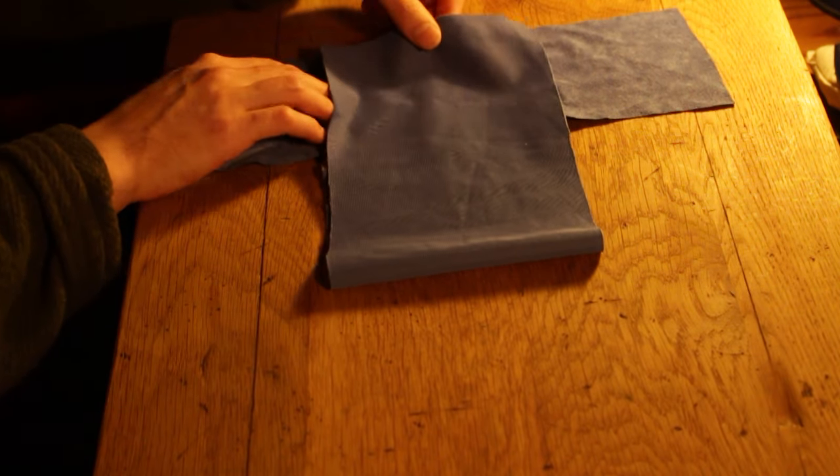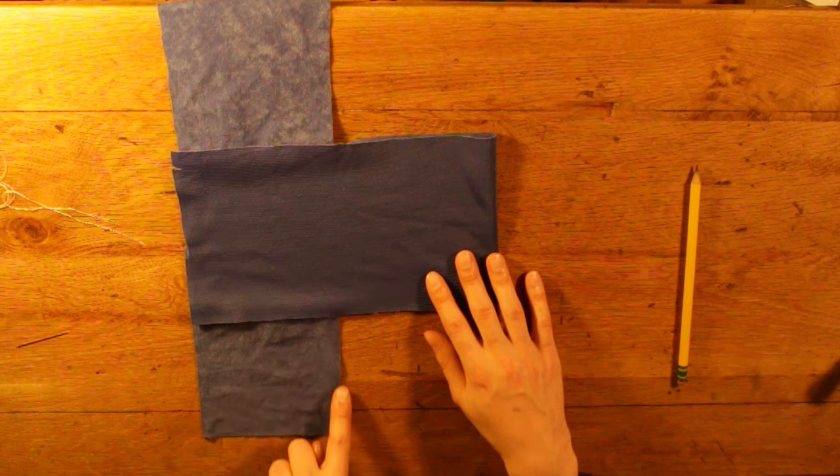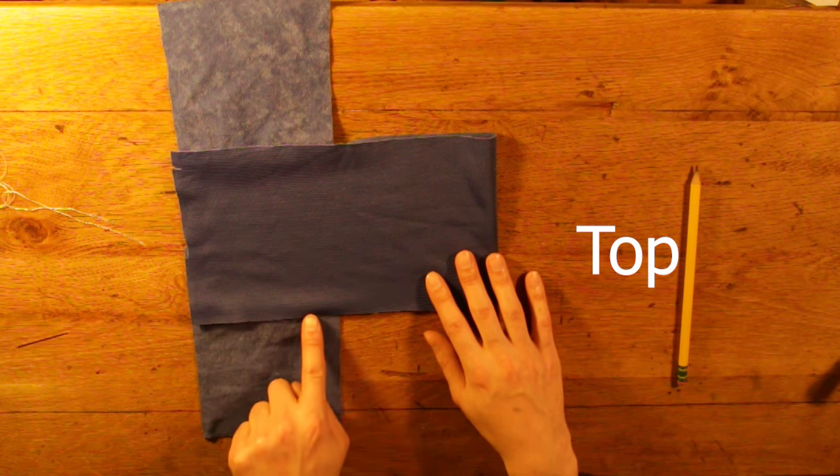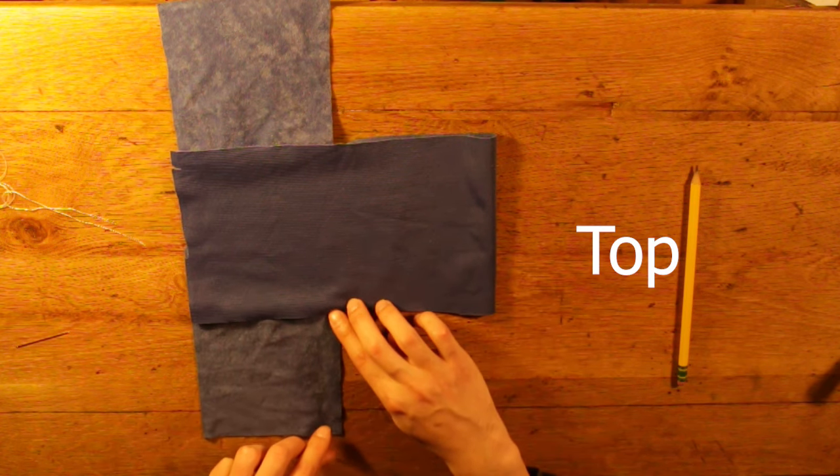Fold the rectangle in half towards the head of the T. The hood should now be inside out. On the square closest to you, grab the side which faces towards the top of the hood and bring it diagonally towards the bottom of the hood.